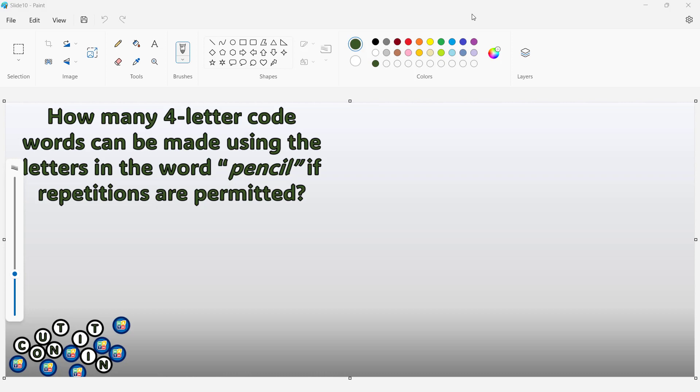We can use the fundamental counting principle to solve this situation. We have the word pencil with 6 letters, and we are going to identify the number of 4-letter code words that can be formed if repetitions of letters are allowed.